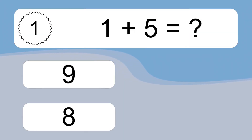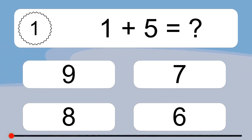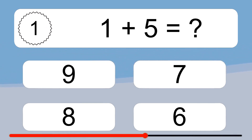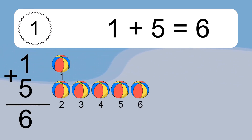1 plus 5 equals what? 1 plus 5 equals 6. Let's count it. 1, 2, 3, 4, 5, 6.